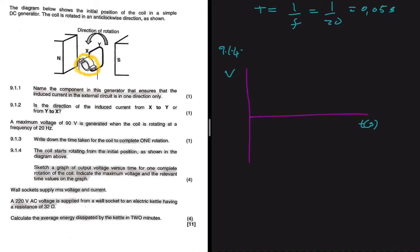We only want one complete rotation. So this is DC, so we shouldn't see anything like a sine wave because it's DC. It should look like this, where we change direction, we go up again, and we have one complete cycle. So this time here should be 0.05 because in 9.1.3 we said that it takes 0.05 seconds to complete one rotation.